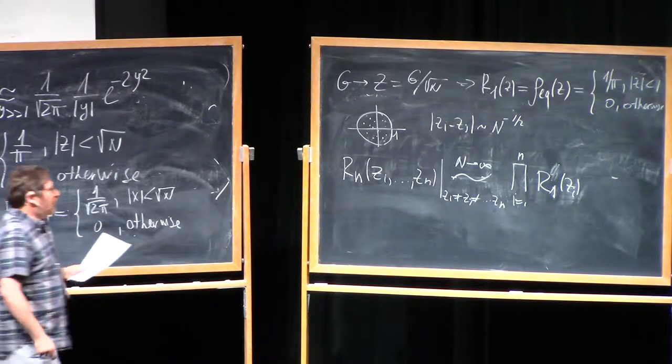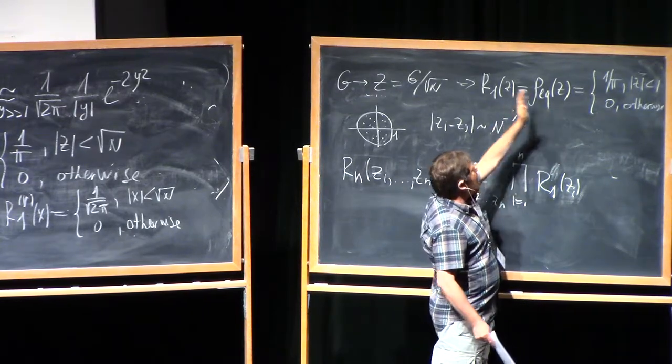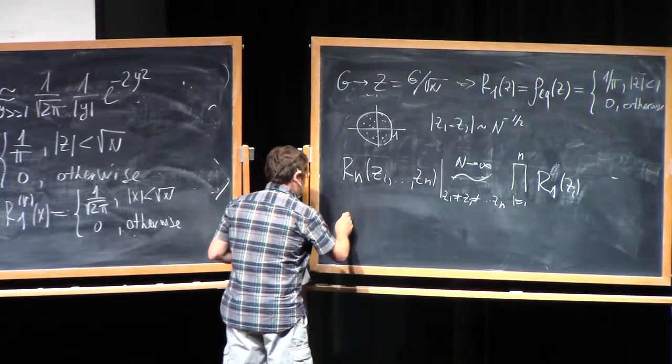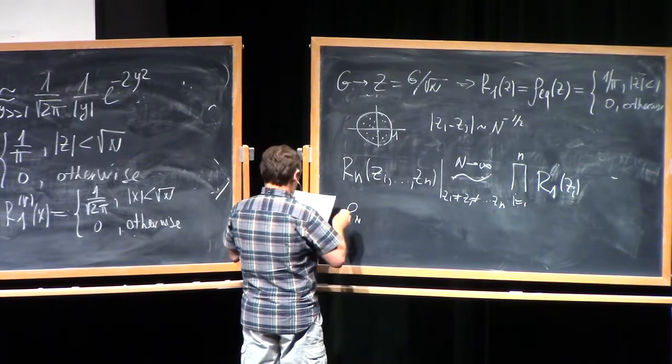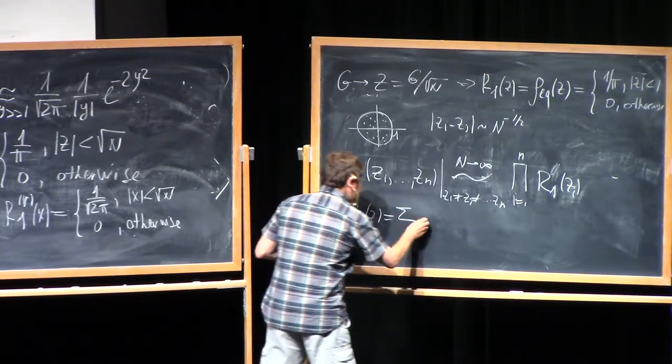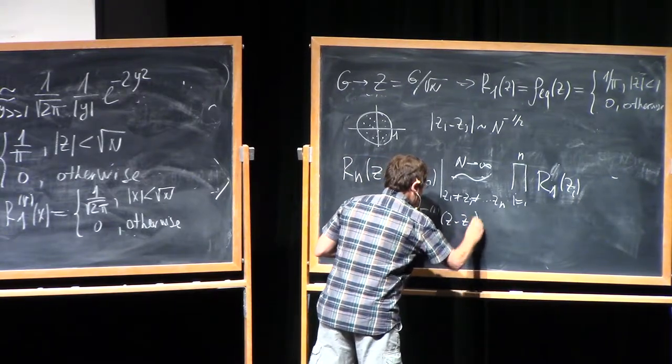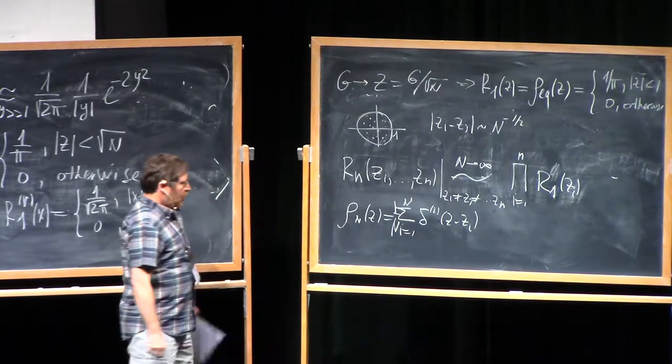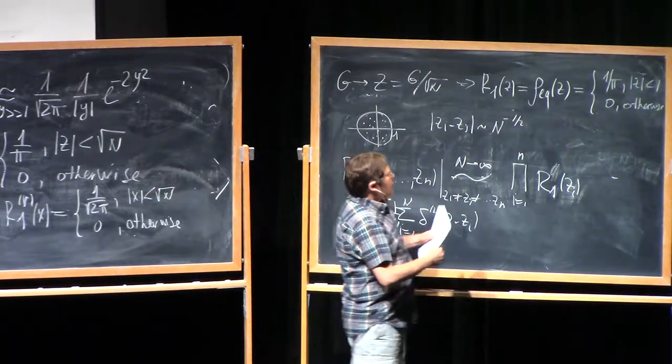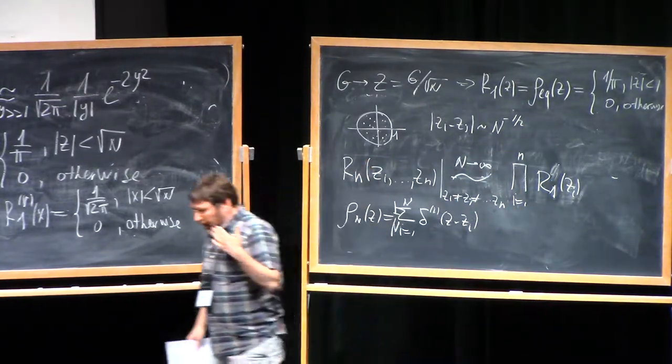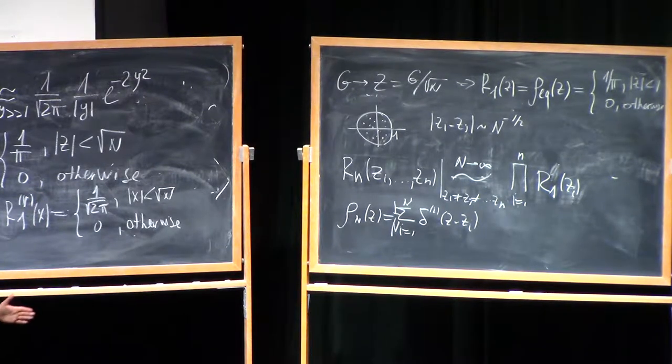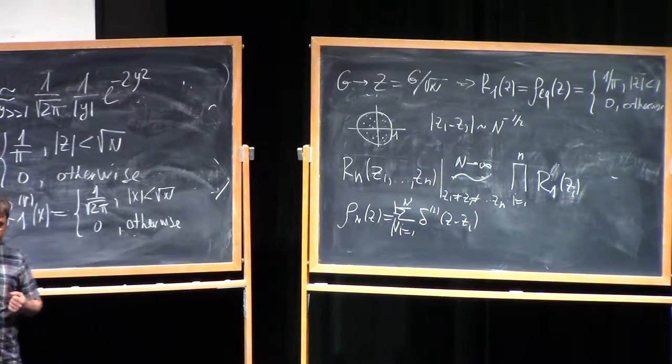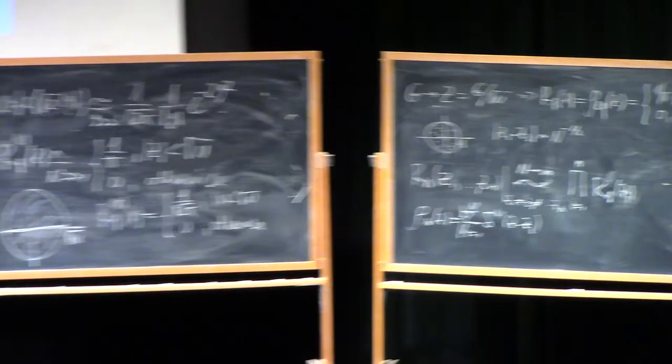But what we else know about the density, we know really that the large deviation type result which controls how the empirical density, namely, by empirical density is just the density of the counting measure, Rn of Z, just sum of delta functions, two-dimensional delta functions, at every eigenvalue of the matrix, one to n, divided by n, one divided by n. So this is the empirical density. We know that it converges to equilibrium density, but we also know how deviations from this, what is the probability for this density or for corresponding measure whose density is this empirical density, to deviate from the equilibrium measure.